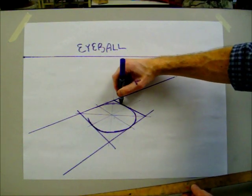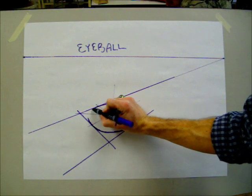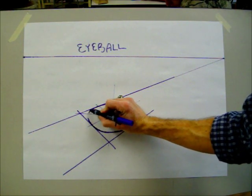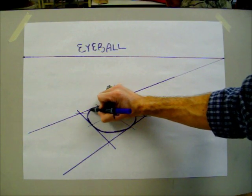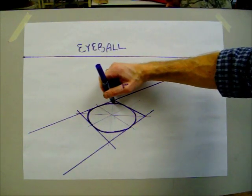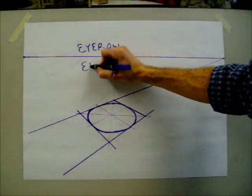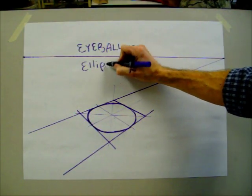And it doesn't change direction fast, it's going to continue riding along this edge and curve. Now I might have to go back in and fix this a little bit, but that is your ellipse. It doesn't change direction fast as if the end of a barrel.